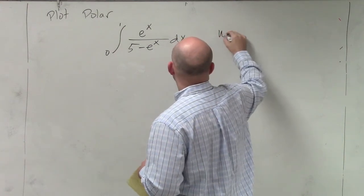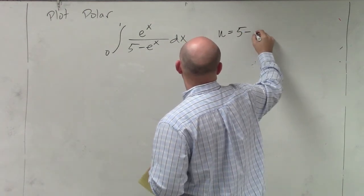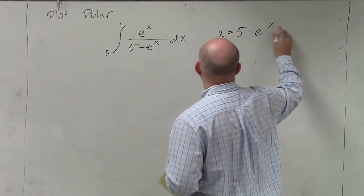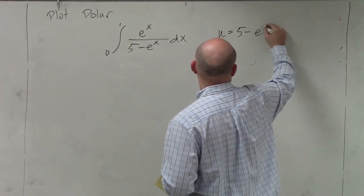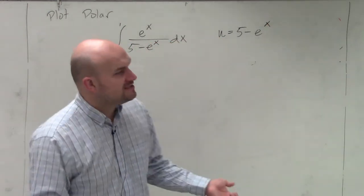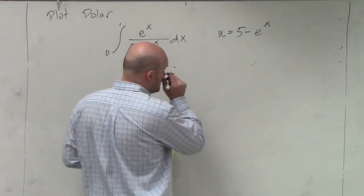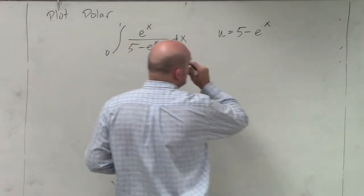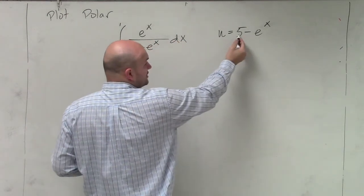So if we're going to say, let's just pretend, let's make 5 minus e to the negative x, or just e to the x. Let that be our u. Now let's find the derivative of this. So obviously that's going to go to 0.